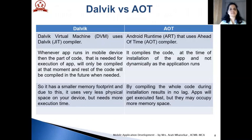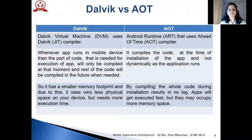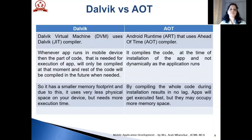What is the difference between Dalvik and AOT? Dalvik Virtual Machine uses a Dalvik compiler, which was a just-in-time compiler. Whenever an app runs on a mobile device, the part of the code that is needed for execution will only be compiled at that particular moment, and the rest of the code will be compiled in the future if needed. In Dalvik, it has a smaller memory footprint and due to this, it uses very less physical space on your device but needs more execution time. Dalvik will do the compilation only when it is needed.